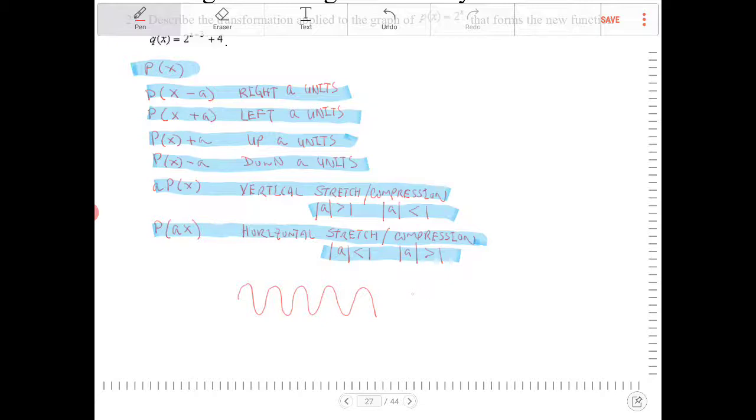like when a is greater than 1, you're going to have a curve that's compressed. When a is less than 1, the wave gets stretched. So it's really the opposite of what happens in the vertical direction.